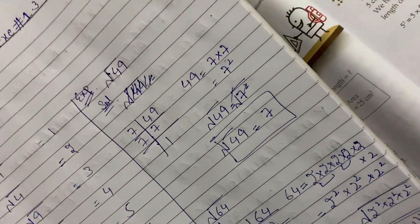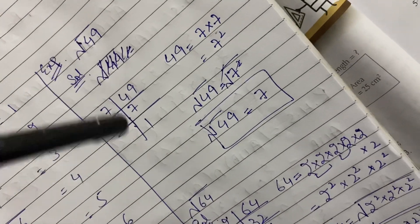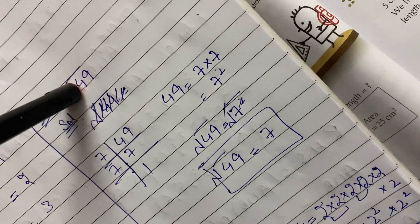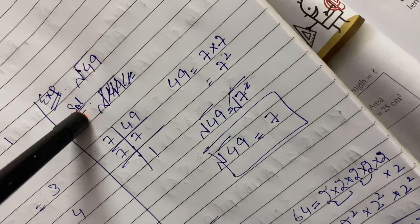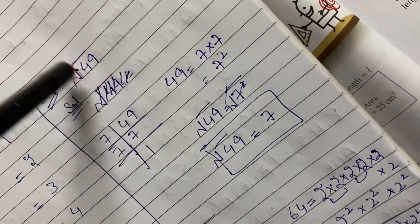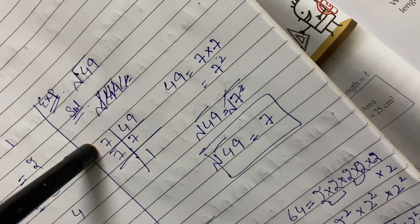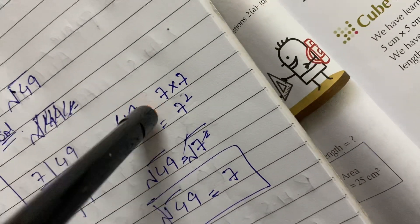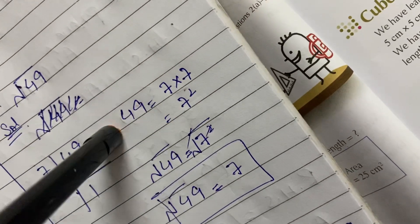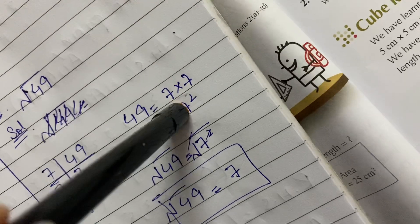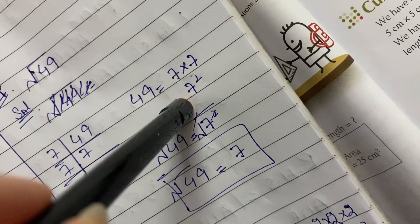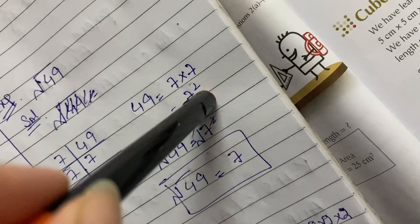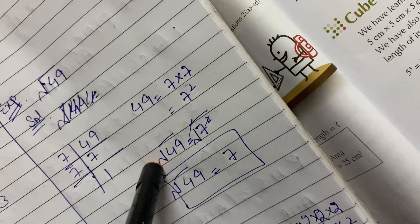Our main task is to solve by prime factorization. Let's begin with an easy example: find the square root of 49. First, we do the prime factorization of 49. We know that 7 × 7 = 49, so we write 49 = 7 × 7. Next, in index notation, 7 × 7 = 7². Now we put the square root on both sides: square root of 49 = square root of 7².